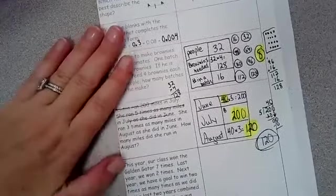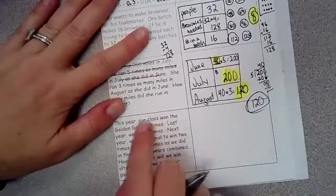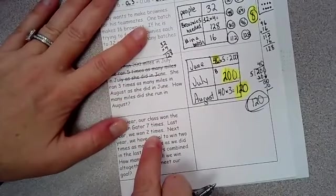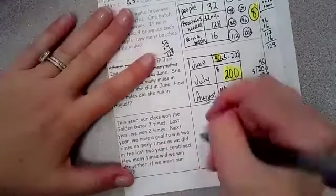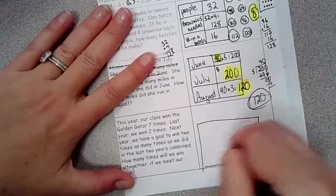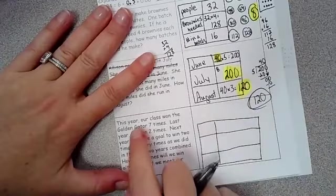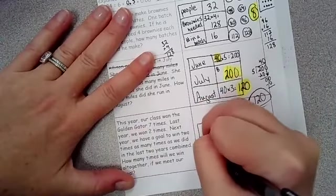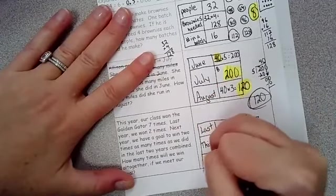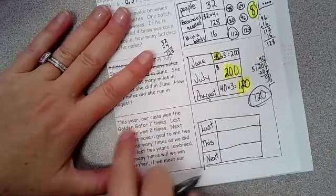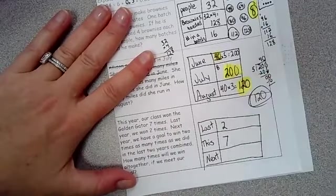And the last one. Last year, oh wait, sorry, this year our class won the Golden Gator 7 times. Last year we won 2 times. And next year we have a goal to win 2 times as many times as we did in the first two years combined. All right. So there's three years here. Draw your chart. All right. So you've got this year, I'm going to write this, last, and next. All right. Start filling in your chart. This year we won it 7 times. Easy. Last year we won it 2 times. Easy.